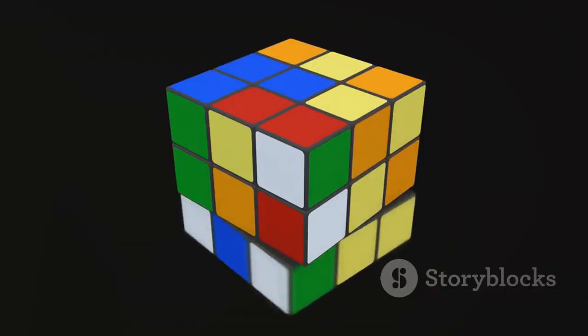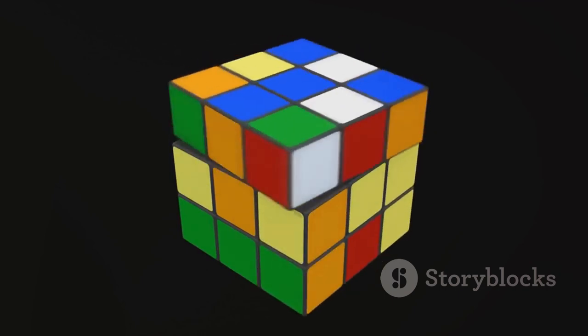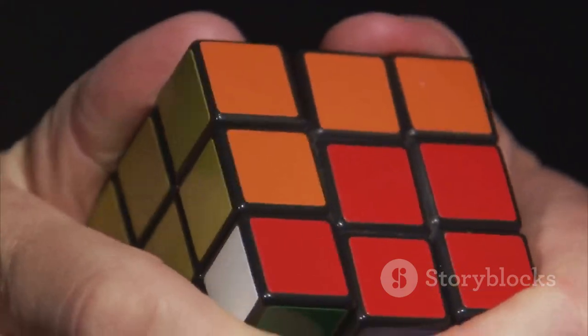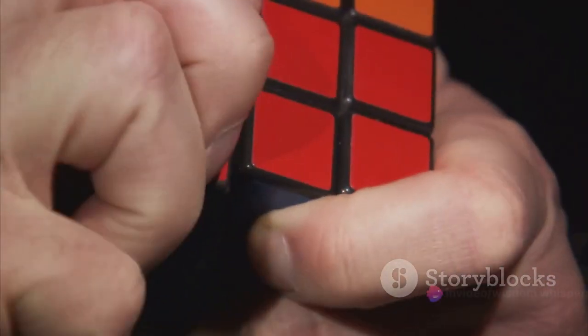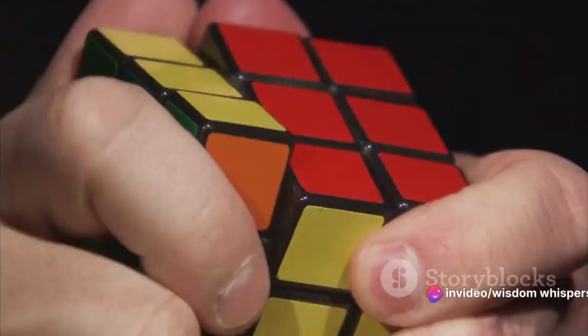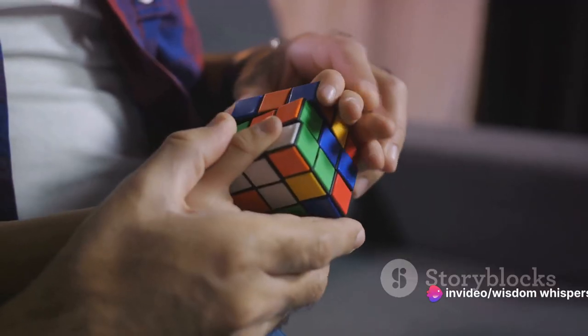And finally, the corner pieces. These are the ones with three colors. They sit, you guessed it, in the corners. There are eight unique corner pieces, and like the edge pieces, they have a specific spot they need to go.